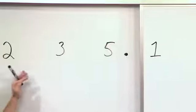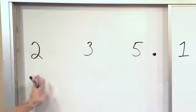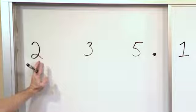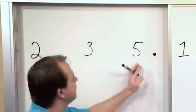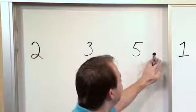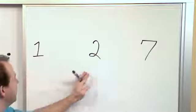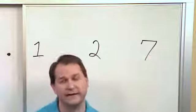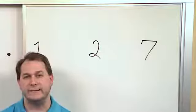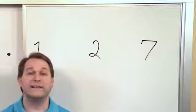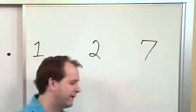You already know that in numbers, the first digit is worth the most, and then this is worth a little bit less, and this is worth less. Well, the same thing continues on the other side of the decimal point — this is worth less, this is worth less, and this is worth even less. So the farther you go to the right, even after your decimal point, the less important or the less worth that digit actually has.